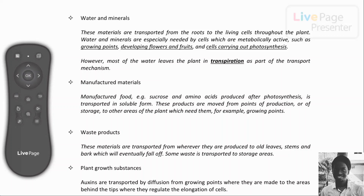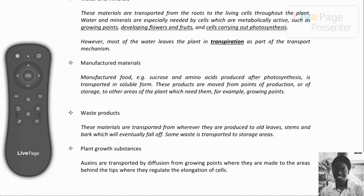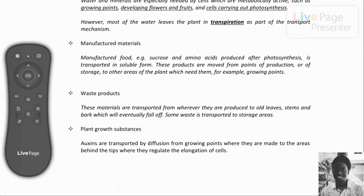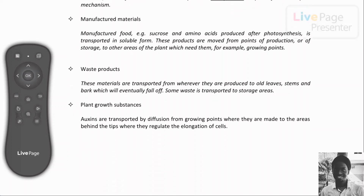Plant growth hormones like auxins are transported by diffusion from growing points where they are made to areas behind the tips of shoots of plants, where they regulate the elongation of cells. These are the materials transported in plants.